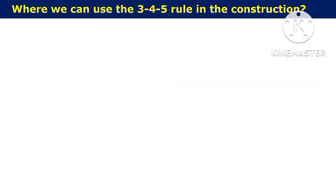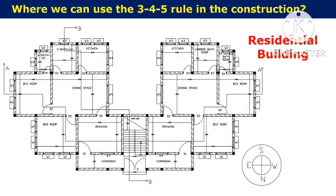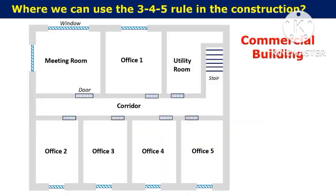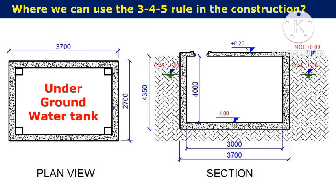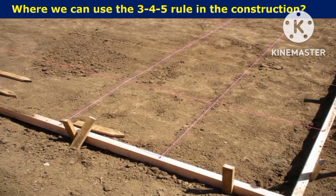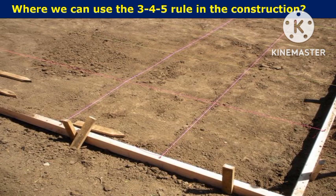Where can we use the 3-4-5 rule in construction work? This 3-4-5 rule can be applied to the layout of all types of structures like residential buildings, commercial buildings, underground tanks, etc. If the corners of the site or plot are perpendicular to each other, you can use this method to complete the layout work. All you need is a measuring tape and a layout string.